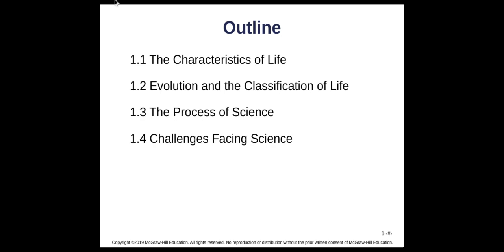In Chapter 1, we're going to go through four different sections. These sections are going to include characteristics of life and evolution and classification, the scientific method or process of science, and then any sort of challenges that are facing science today. On D2L are your objectives, but very generally they are going to come from this outline where we are going to know the basic characteristics of life, describe terms relative to defining living things like energy, metabolism, DNA, and natural selection.